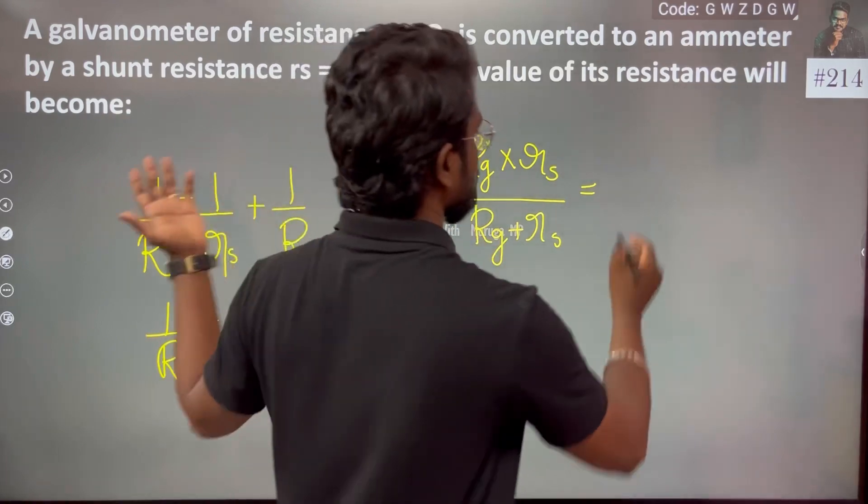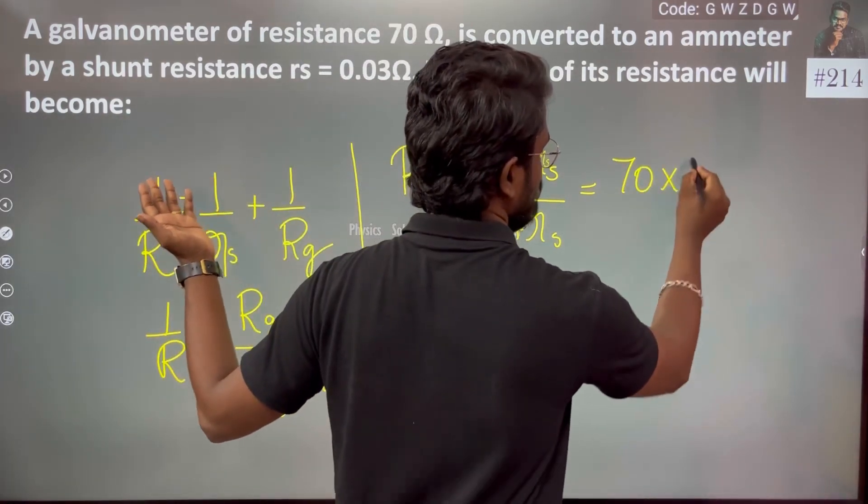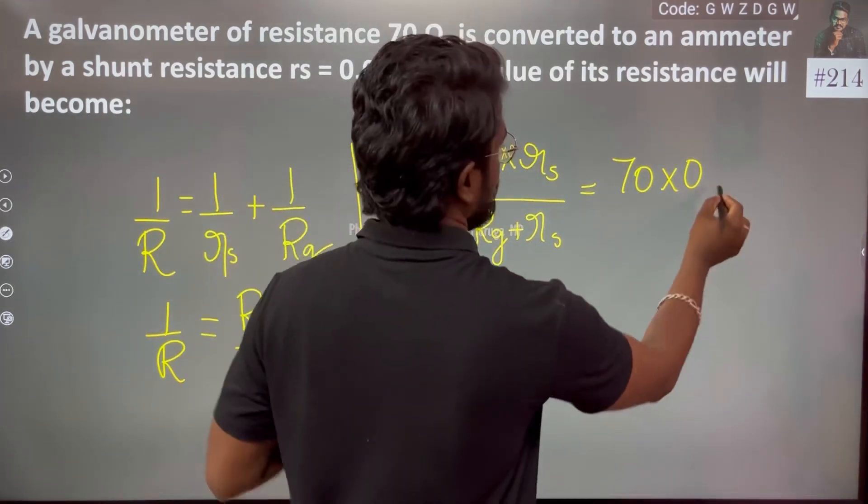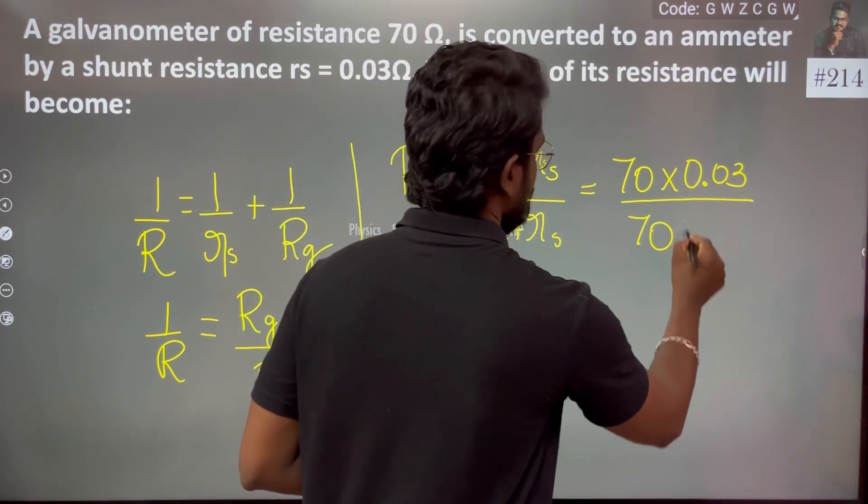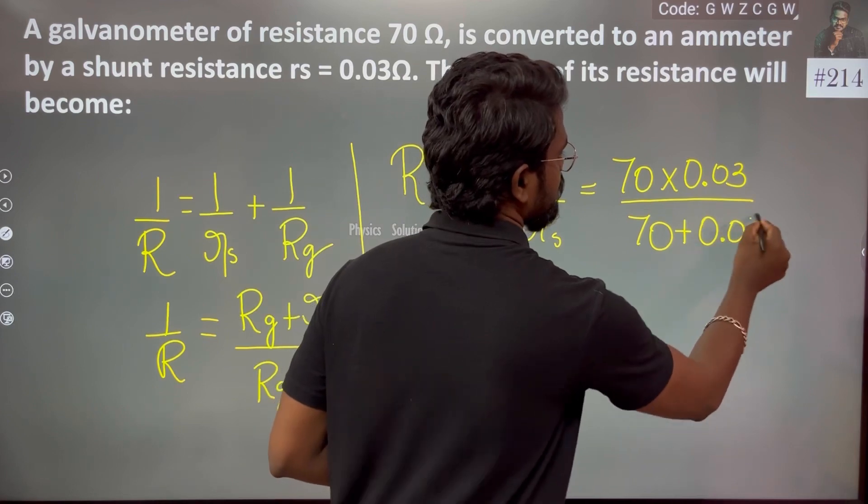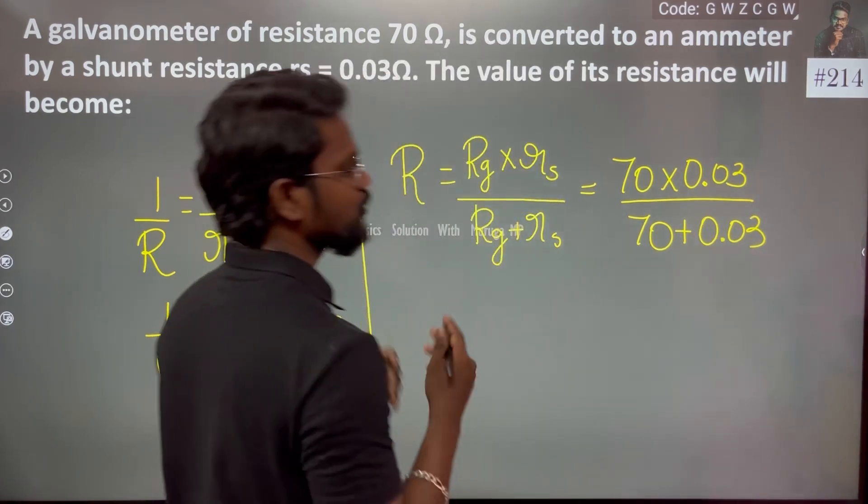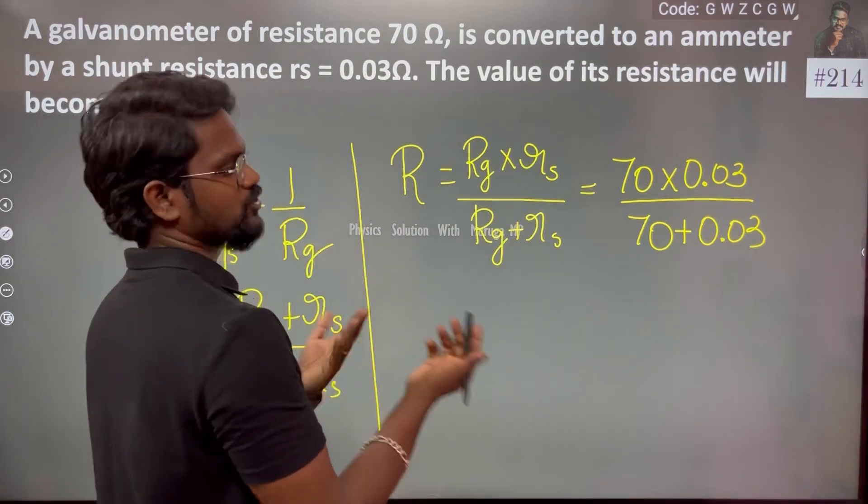So resistance is 70, so 70 times 0.03 divided by 70 plus 0.03. When you do the calculation, the value almost becomes...